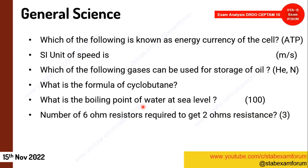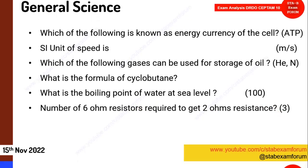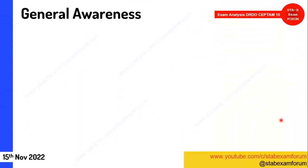What is the boiling point of water at sea level? It should be 100°C, but I'm not sure whether this question actually came in this shift. Then a numerical on the number of six-ohm resistors required to get two-ohm resistance — the answer is three.